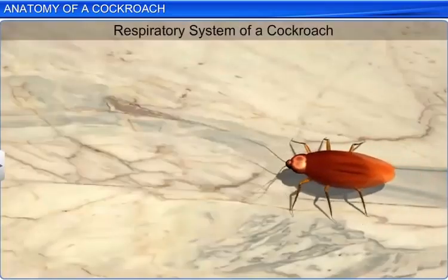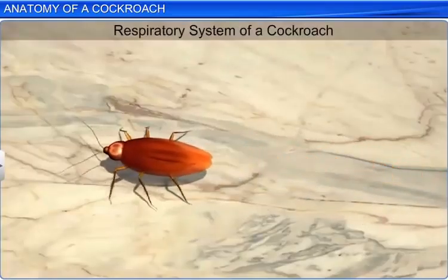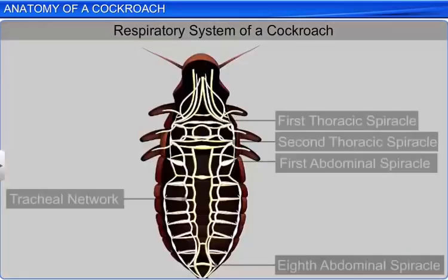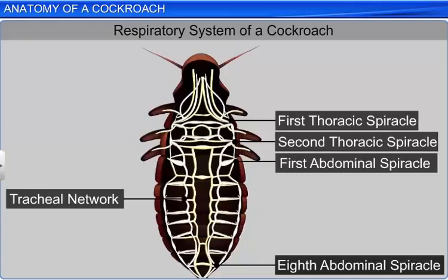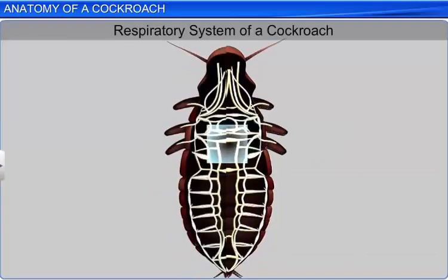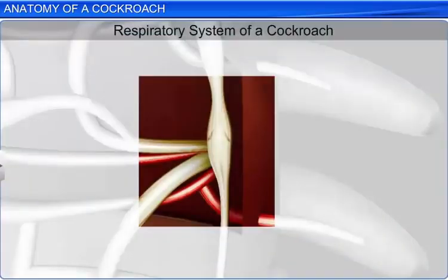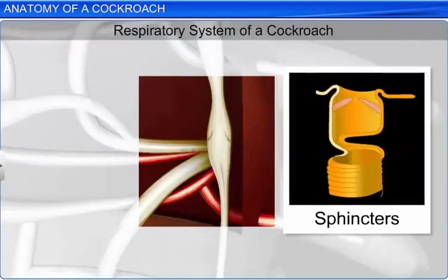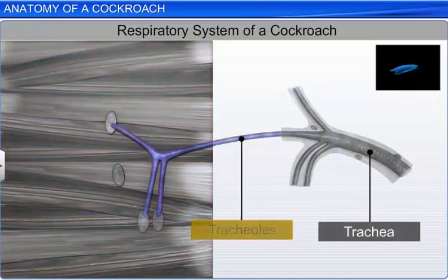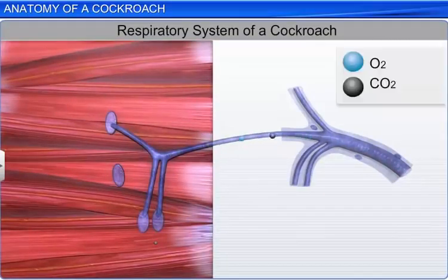The respiratory system also forms a part of the anatomical study of a cockroach. This system consists of a network of trachea that opens to the exterior through 10 pairs of spiracles which are located on the lateral side of the body. The opening of these spiracles is regulated by sphincters. The tracheas are further divided into thin tracheoles which supply oxygen to all the parts of the body. Gaseous exchange in these tracheoles takes place through diffusion.